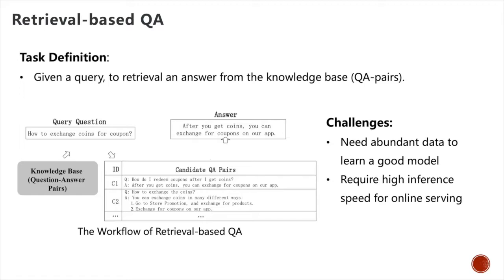The retrieval-based question-answering method has been widely used for building question-answering systems. The essential task here is to retrieve an answer from the knowledge base for a given query. We assume to have question-answering pairs in our knowledge base, and for each given query, we use a text-matching method to find the question that is closest to the query, then fetch the corresponding answer.